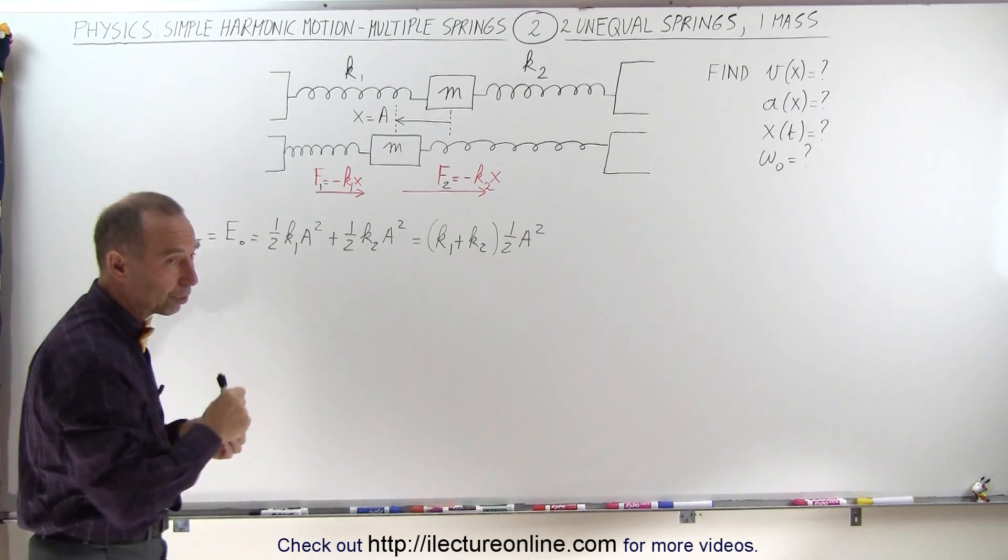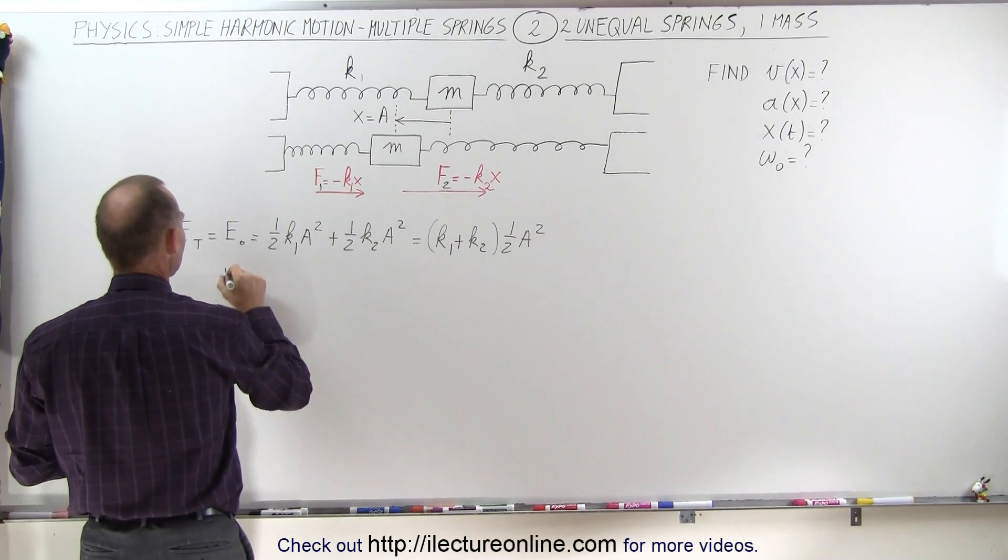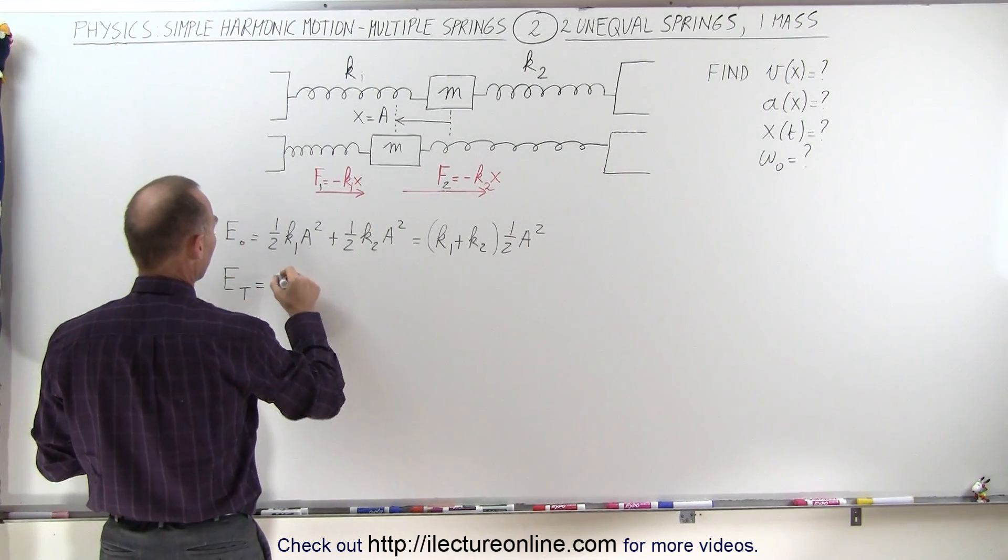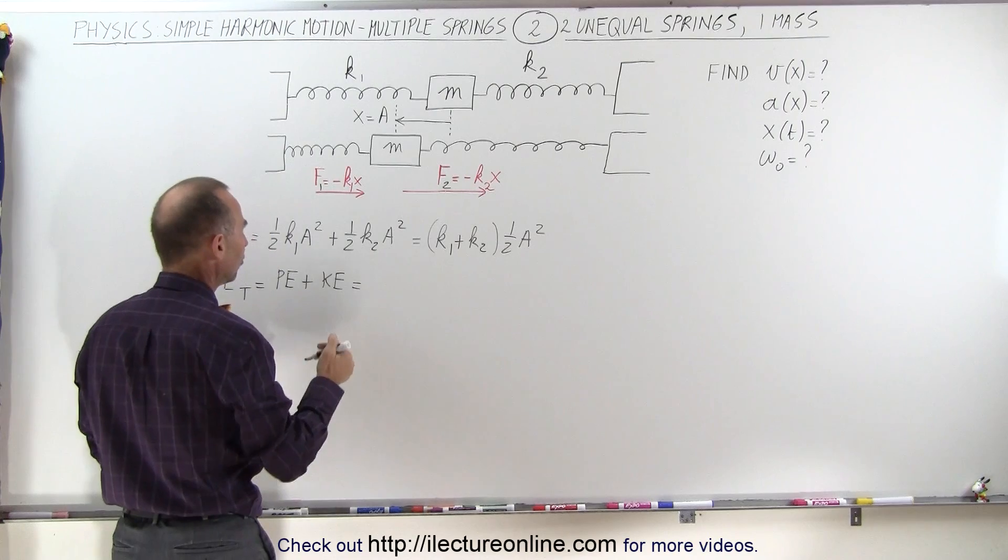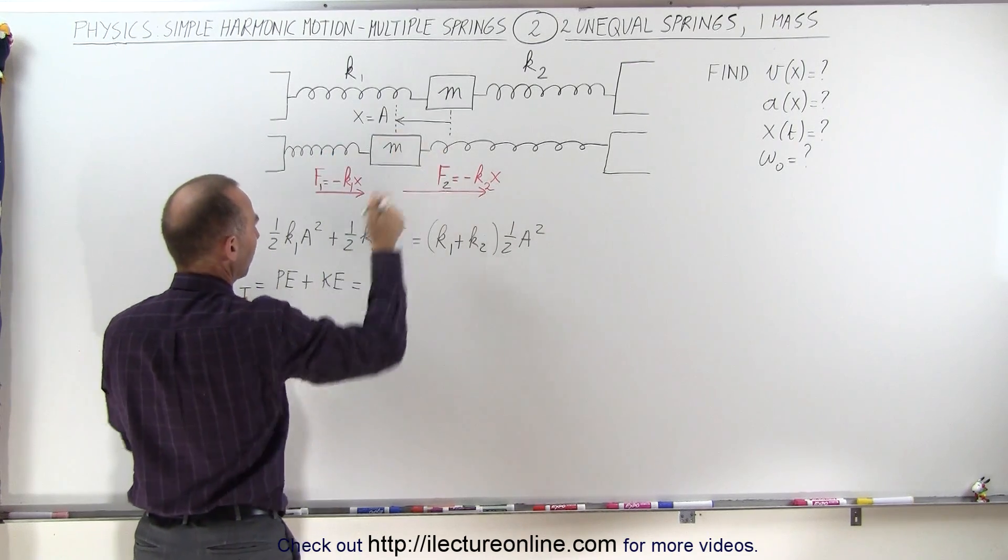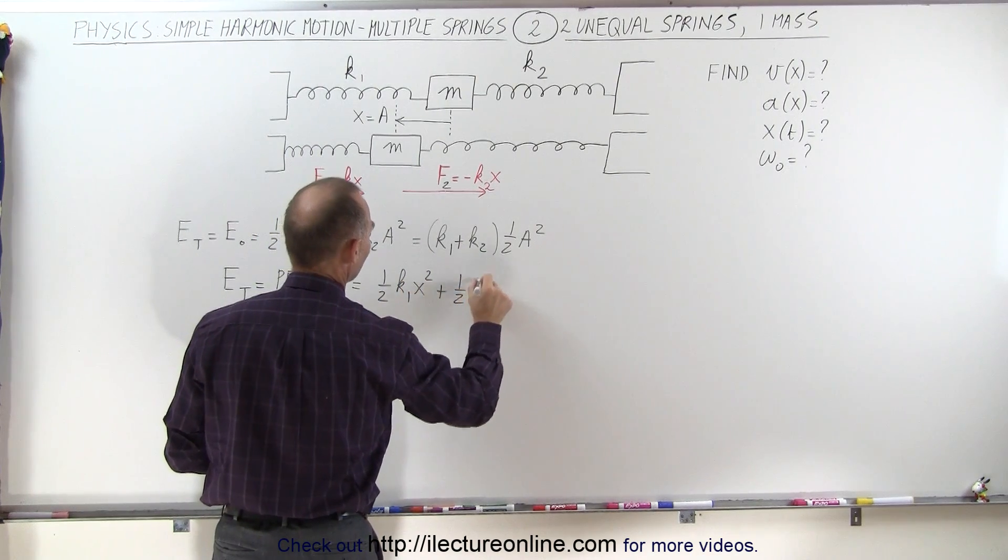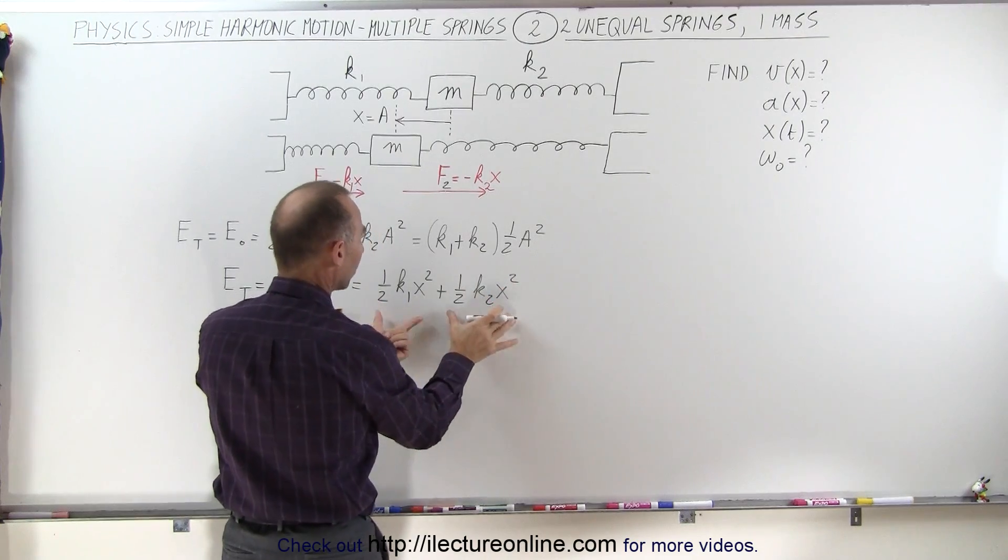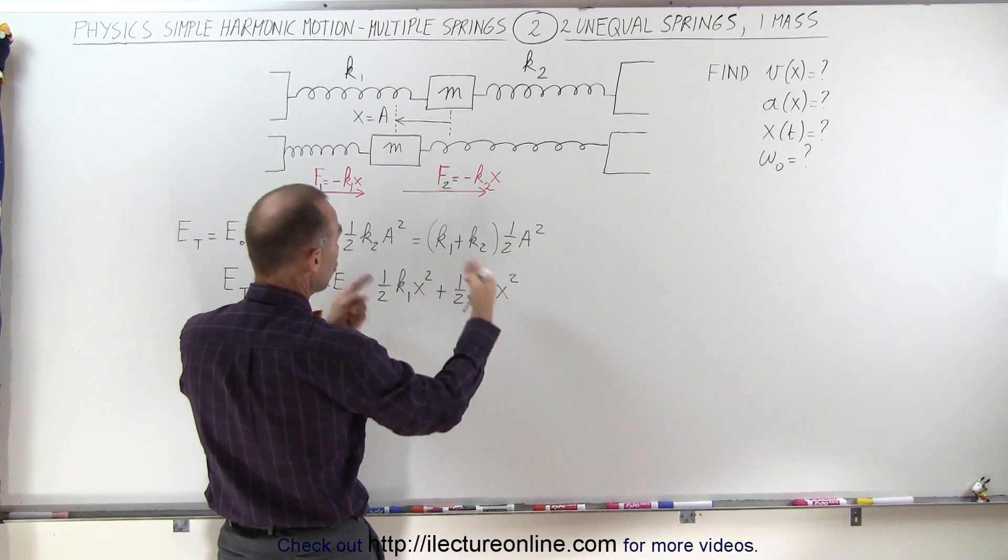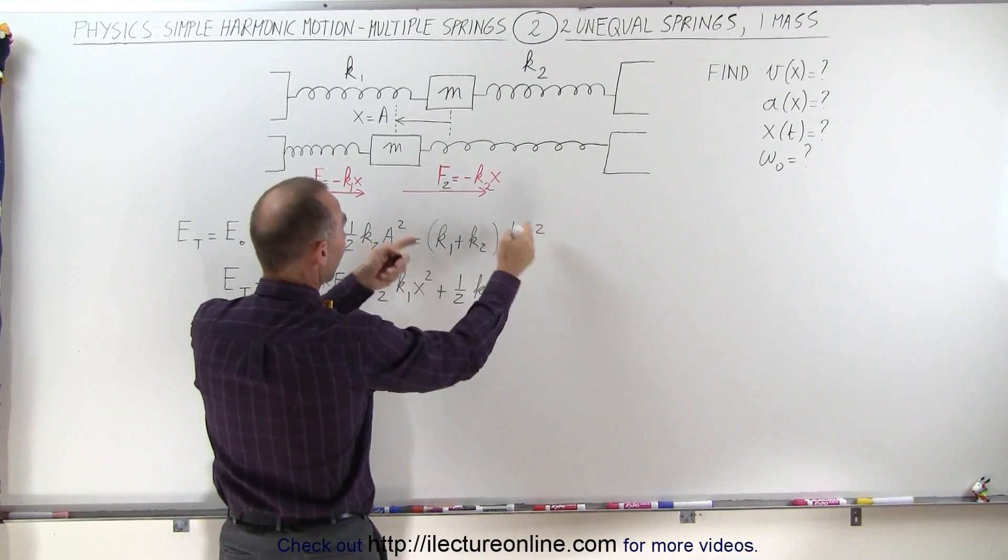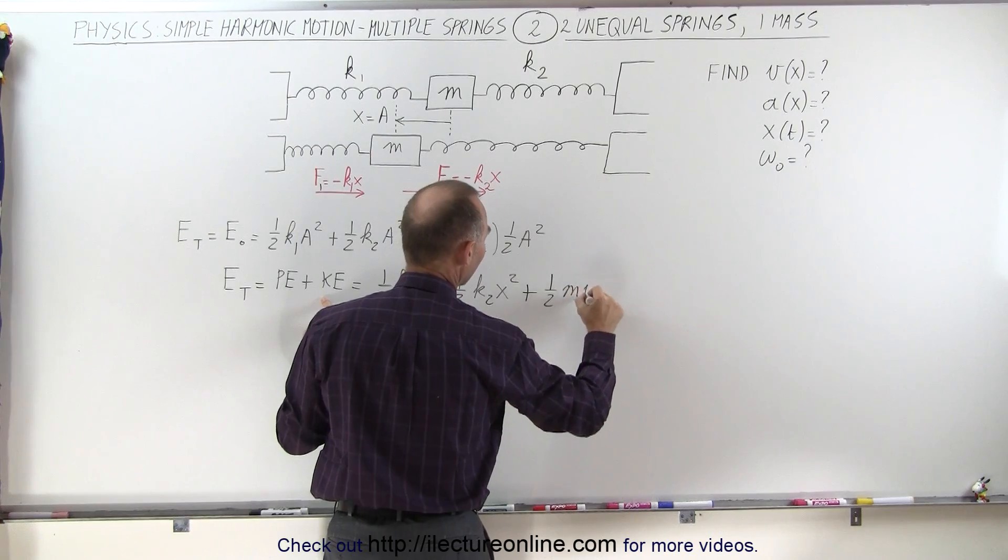When the block is oscillating back and forth, the total energy will then be subdivided into potential and kinetic energy. So the kinetic energy of the system. Now the potential energy will be the sum of the potential energies of the two springs. So it'll be one-half k1 x squared plus one-half k2 x squared. That'll be the total potential energy at any point in time or any position x. When x is zero, there's no potential energy. And when x is the maximum, you have the maximum potential energy. Plus the kinetic energy, which will be one-half mv squared.